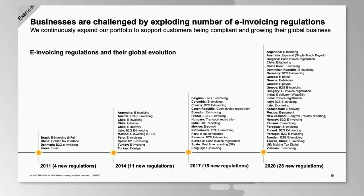When we look at e-invoicing regulations and the global evolution, we see a remarkable evolution across the years. Starting with 2011, where there were 4 new regulations, up to 2020 with 28 new regulations. This growth is both in country coverage and in areas of e-invoicing — the numbers are exploding, growing very quickly.